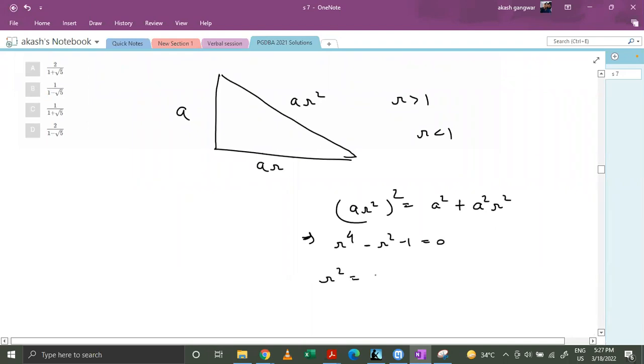R square equals to 1 plus minus under root 5 by 2.